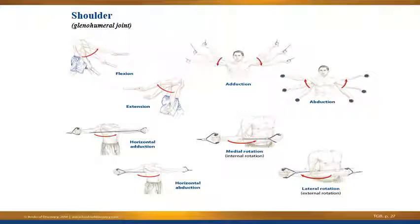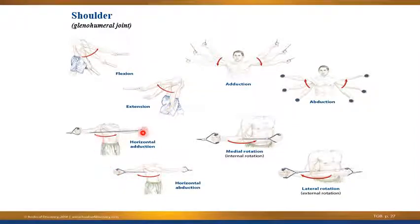At the shoulder — most specifically the glenohumeral joint — you have the motions of flexion and extension, adduction and abduction, medial and lateral rotation (also known as internal and external rotation). At the shoulder, you also have horizontal adduction and horizontal abduction. These require the arm to be in a specific elevated position — horizontal abduction is when the arm moves out to the side, and horizontal adduction is when it moves back in towards the midline. This involves a specific shoulder position in order to carry out that movement.